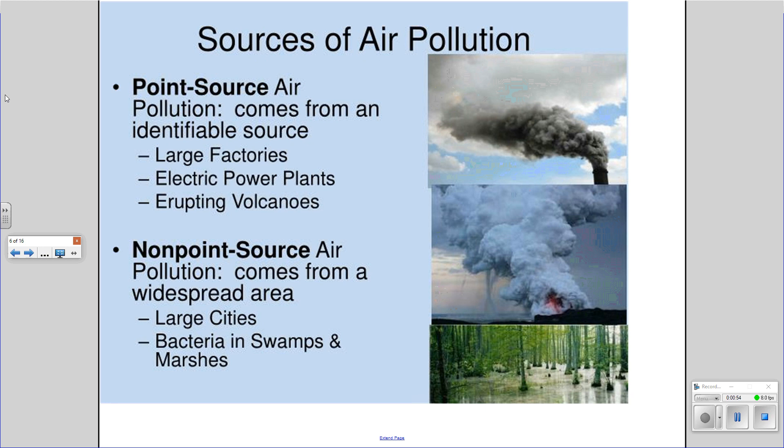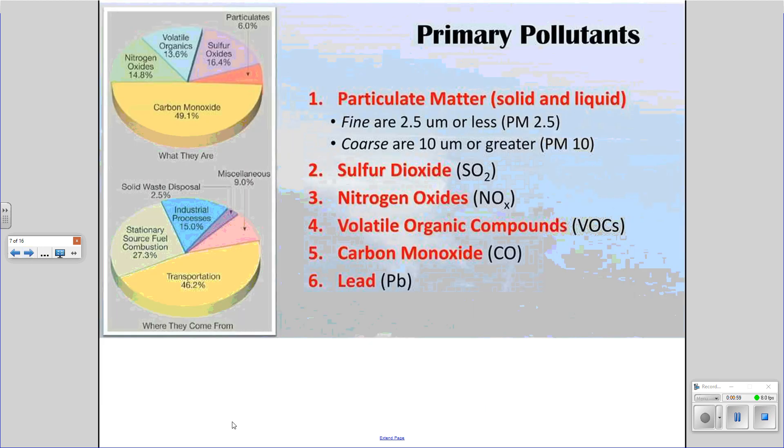We're going to look at a couple examples. In terms of our primary pollutants, you have the main ones that you should know. You should be familiar with particulate matter, which is your solid and liquid. These are your fine particles that are 2.5 micrometers or less, also known as PM 2.5. Of course, they have a particle size of 10 micrometers or greater, otherwise known as PM 10.